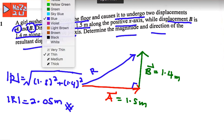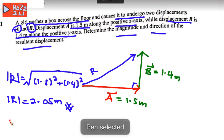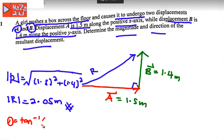So how to calculate the resultant here? You can use the equation tangent theta. Let's say this is theta, angle theta.